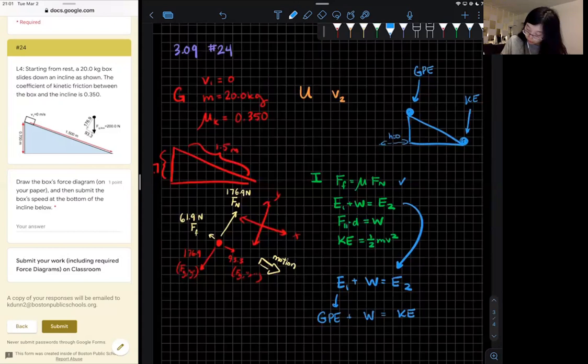So when I think about which forces actually contribute to my work, when I look at my axis of motion, it looks like there's force of gravity in the modified x direction times the displacement, plus the force of friction along that same axis of motion parallel to the surface times displacement equals KE plus GPE.